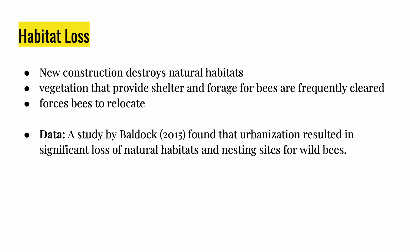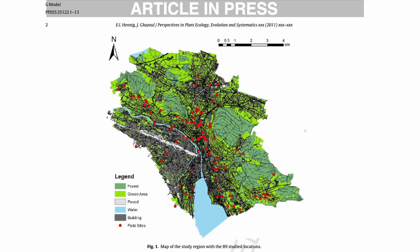First up is habitat loss. New construction destroys natural habitats and often leads to reduced availability of nesting sites for wild bee colonies. Trees, shrubs, and other vegetation that provide shelter and forage for bees are frequently cleared, disrupting their natural environment and forcing them to relocate. A study by Baldick in 2015 found that urbanization resulted in significant loss of natural habitats and nesting sites for wild bees, leading to decreased bee diversity and abundance in urban areas compared to rural areas.